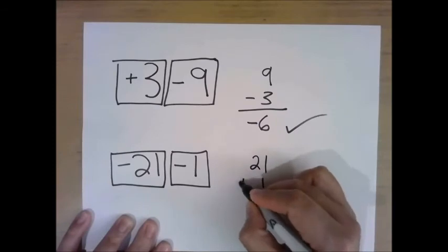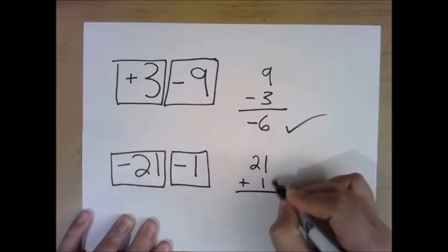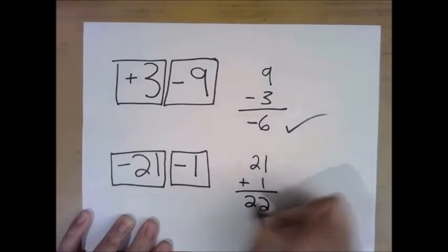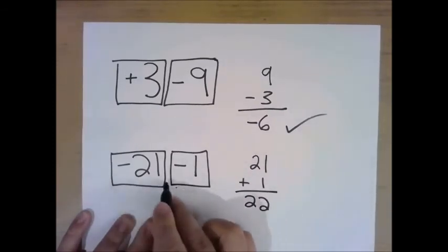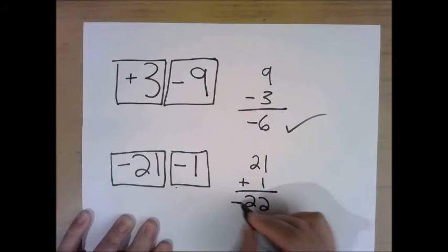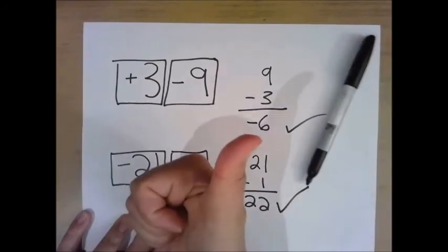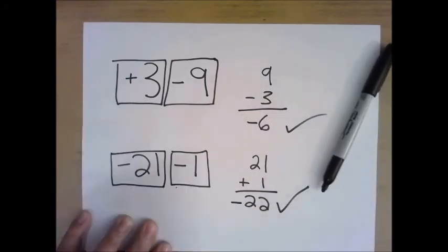We added and kept, cause that's what you do. 21 plus 1 is 22. Since they're both negative, the answer is negative 22. If you sing this song, the answer is true.